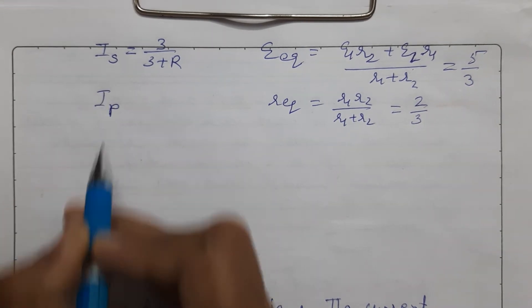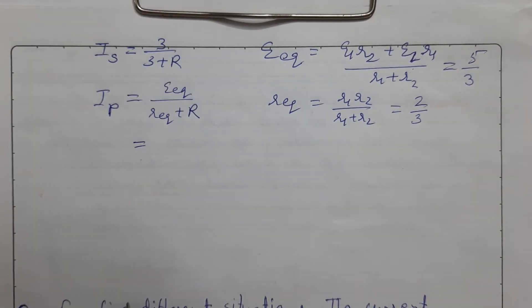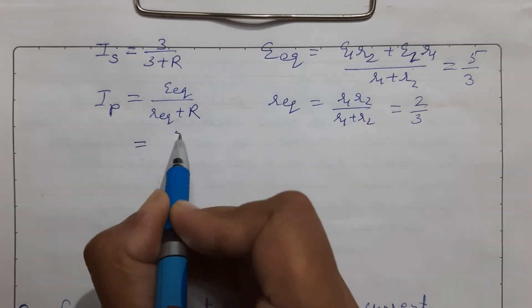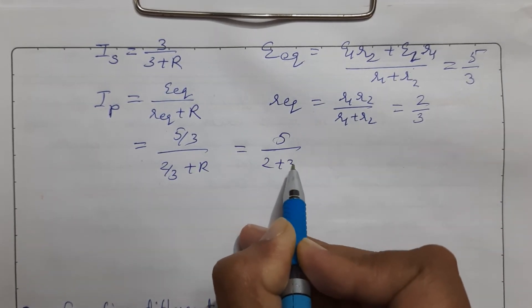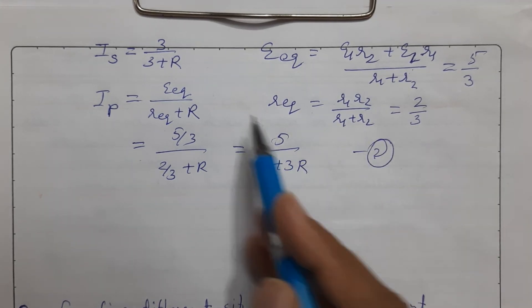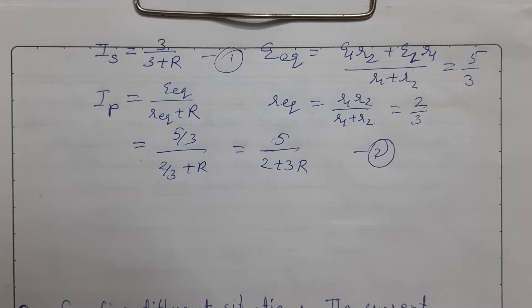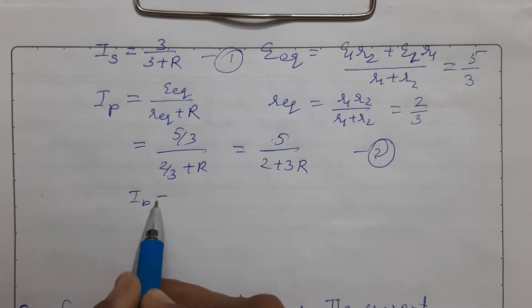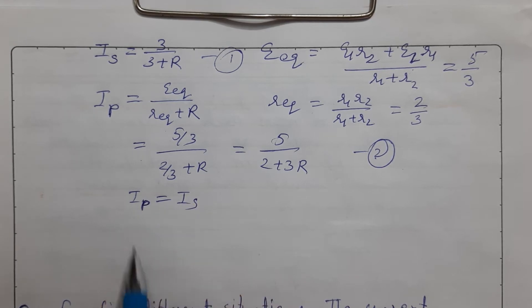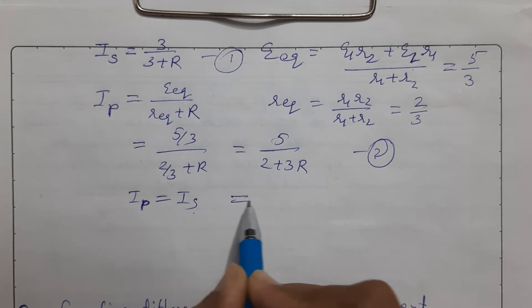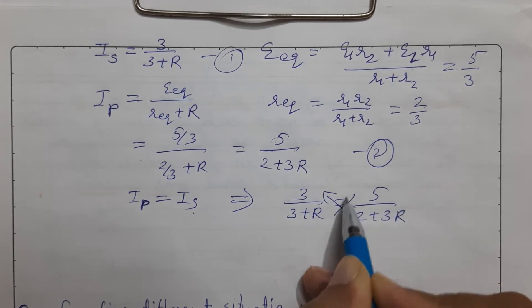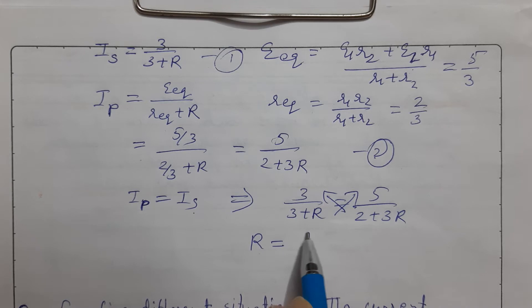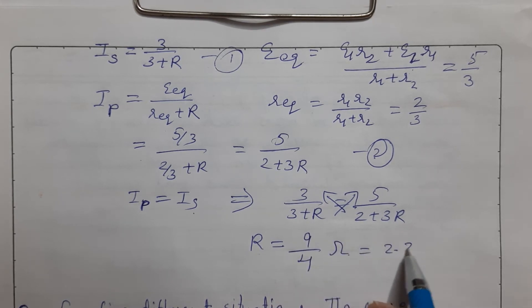So the current in parallel is I_P equals (5/3) divided by (2/3 + R), which simplifies to 5 divided by (2 + 3R). Setting I_S equal to I_P: 3/(3+R) = 5/(2+3R). Cross-multiplying and simplifying gives R equal to 9/4 ohm, or 2.25 ohm.